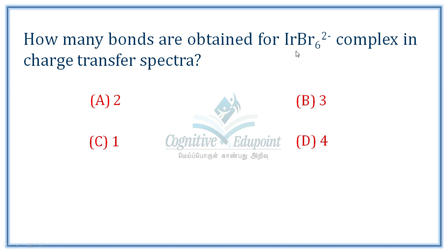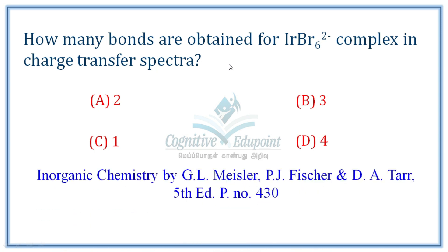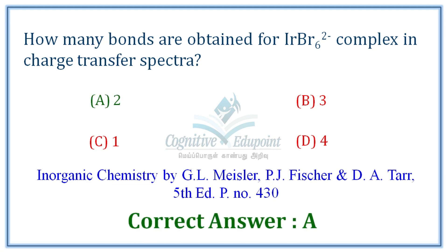Next question: how many bands are obtained in the IR charge transfer spectrum of IrBr₆²⁻? For this iridium bromide complex charge transfer spectrum, the correct answer is 2 — option A. The number of signals obtained in the charge transfer spectrum is 2 lines.